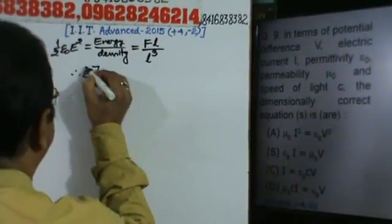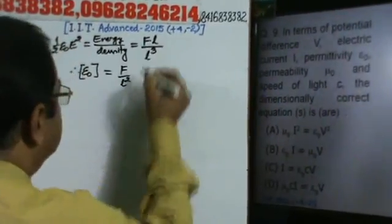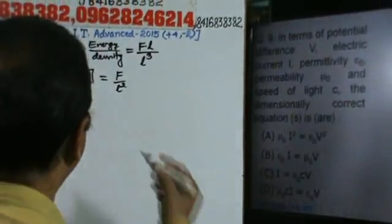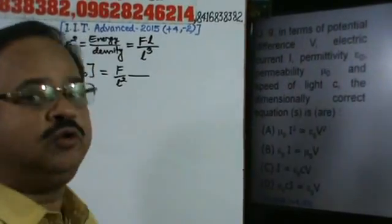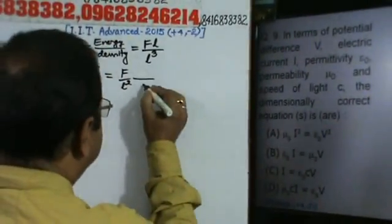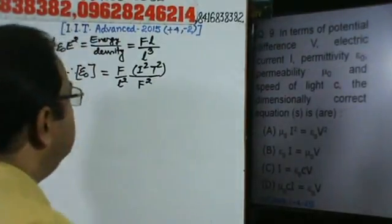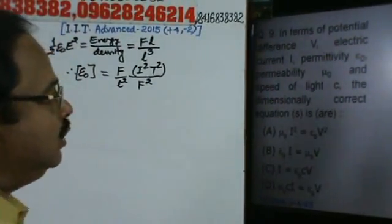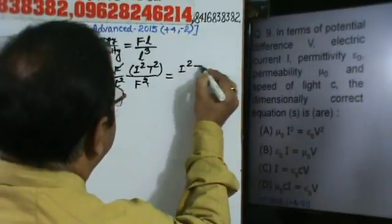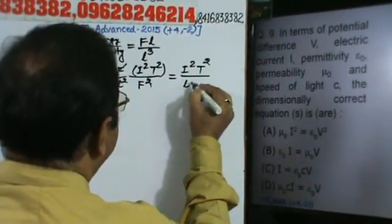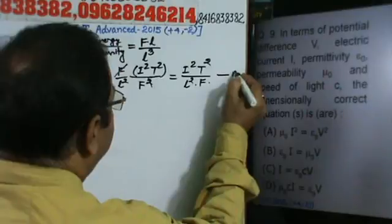The dimension of epsilon naught can be found from the energy density formula: epsilon naught E² / 2 = F/L². Since E = F/q, substituting gives epsilon naught proportional to F² in numerator with I² T² in denominator divided by L² F. Simplifying, we get dimension of epsilon naught = I² T² / (L² F). This is equation number 1.